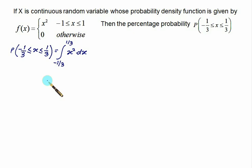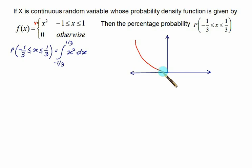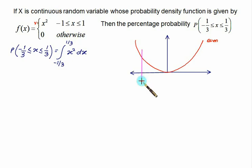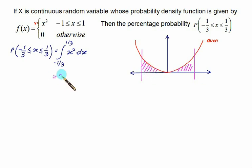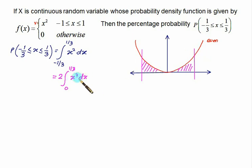Recall that x² is an even function because it is symmetric about the y-axis — it is an upward parabola. Taking advantage of this symmetry, the area from −1/3 to 1/3 equals 2 times the integral from 0 to 1/3 of x² dx. So instead of the full interval, we use 2 times the right half.